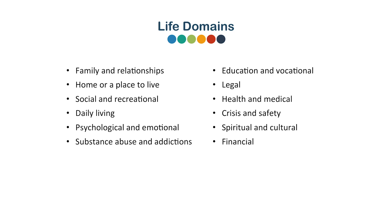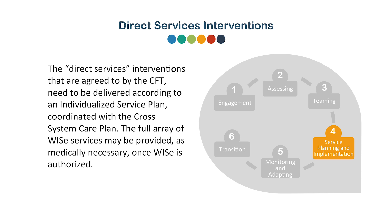In this phase, the CFT develops goals and objectives for all life domains in which the youth's mental health symptoms impair functioning, including family life, community life, education, vocation, independent living, and others. The CFT identifies the specific interventions selected in the initial CSCP to meet those goals and objectives. Direct services interventions agreed upon by the CFT must be delivered according to an individualized service plan coordinated with the cross-system care plan. The full array of WISE services may be provided, as medically necessary, once WISE is authorized.